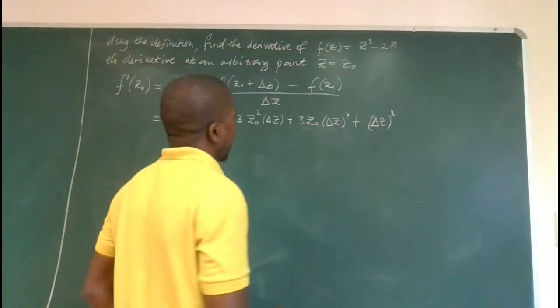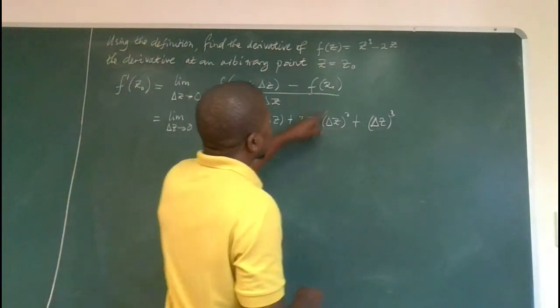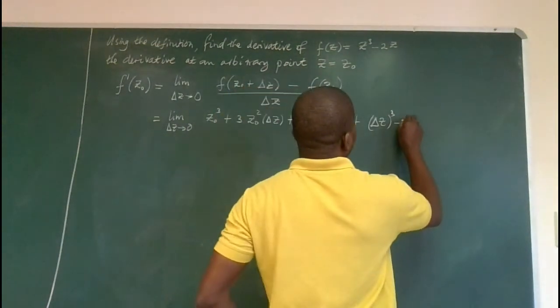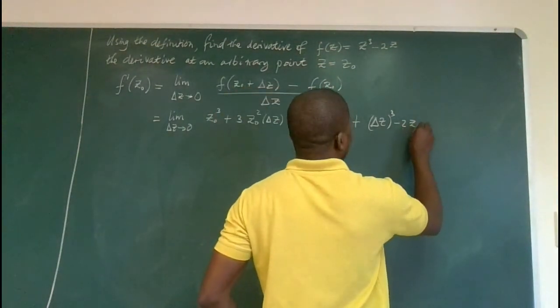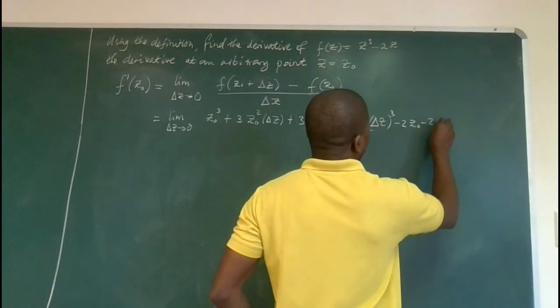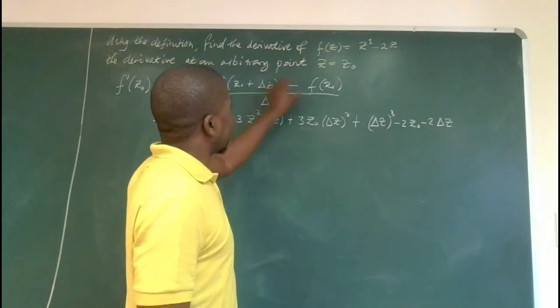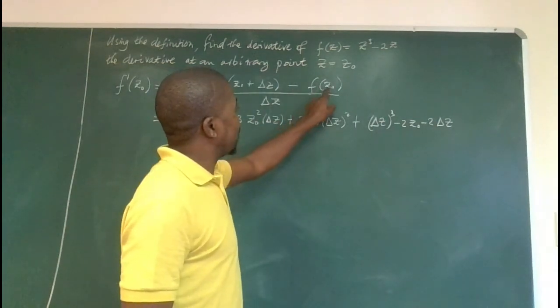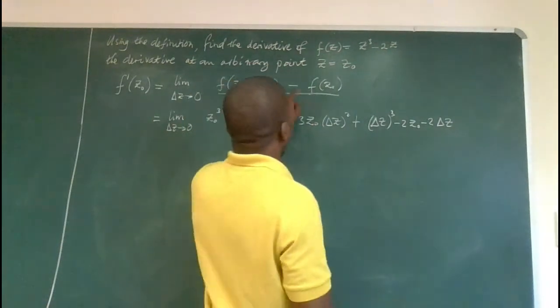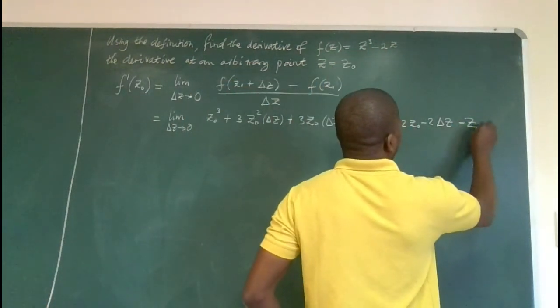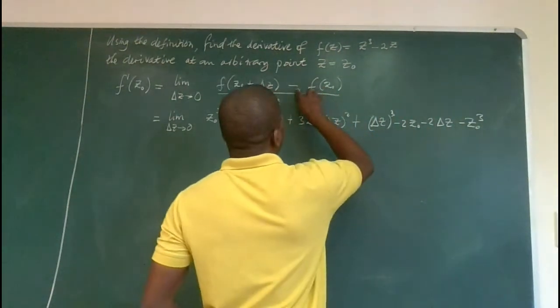And we need to subtract two by that, so it's minus two by z naught minus two delta z. We are done with this one. Now minus, we put z naught in that expression, then minus. So it will be minus z naught to power of three.